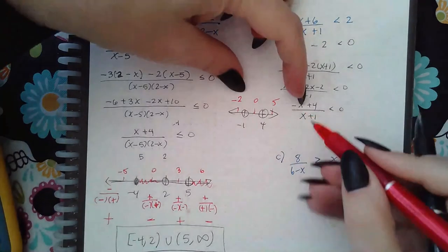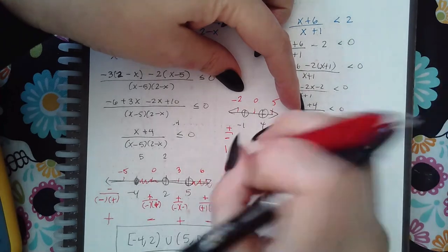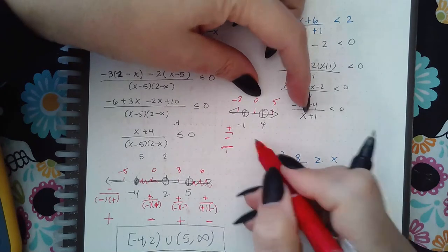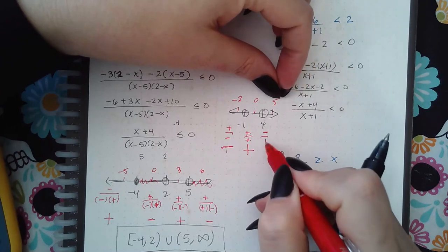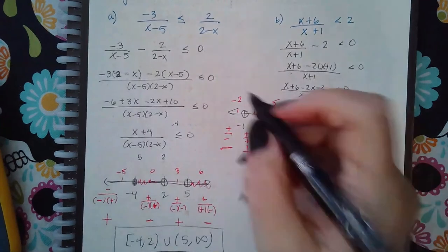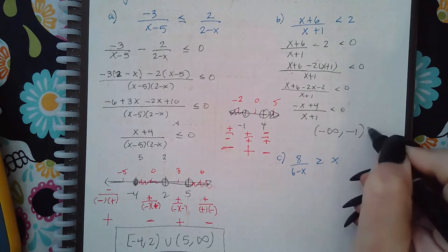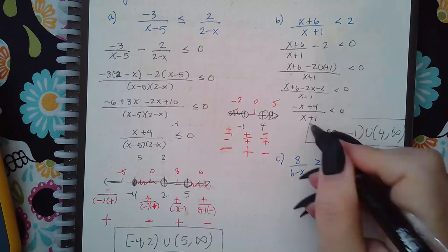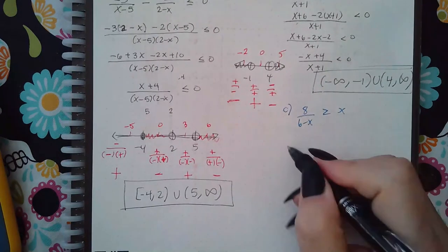We get a positive 4, which is positive, then negative. Then we get a positive and a positive, which is positive. Here we get a negative and a positive, which is negative. We are looking for the places where it is less than 0, so that's the negatives. The answer is going to be negative infinity to negative 1, and then from 4 to infinity.